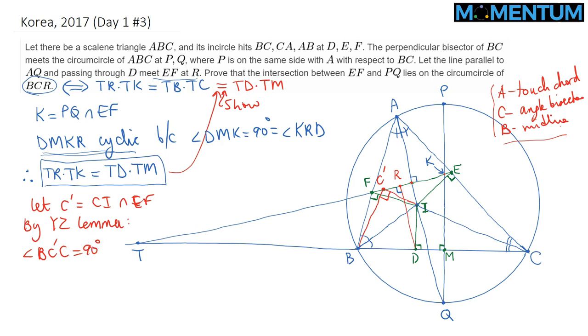By a similar argumentation, if we extend BI and let it intersect EF at this point which I call B', by the same reasoning, angle BB'C, this angle here if we extend it, is also 90 degrees. So angle BB'C is also 90 degrees like BC'C.